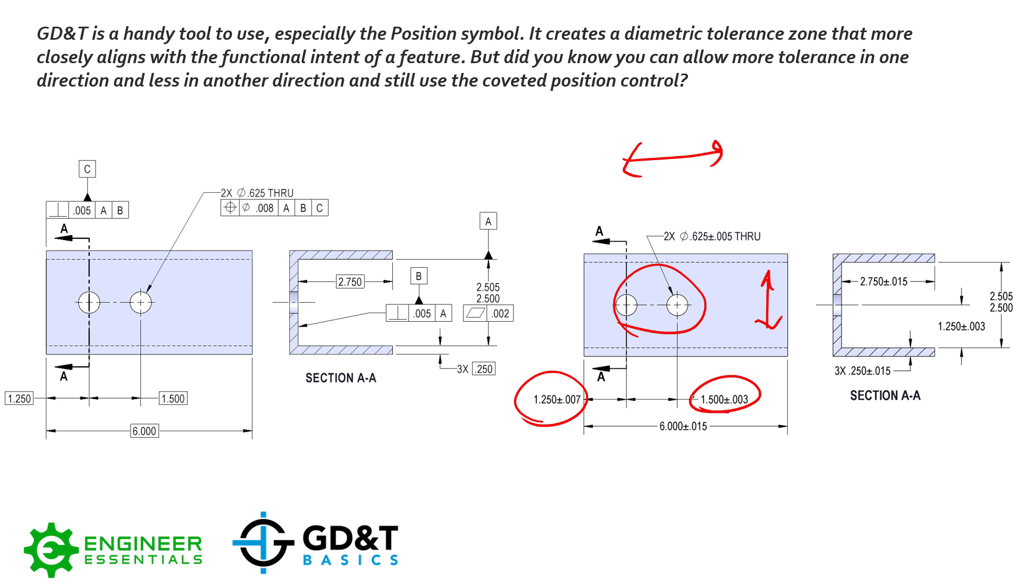Functionally, we can allow more tolerance in one direction than we do the other direction, or bilateral, right? So this now no longer meets this design intent. How would we change the GD&T to match this design intent?